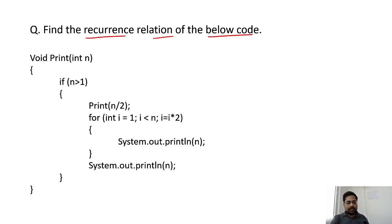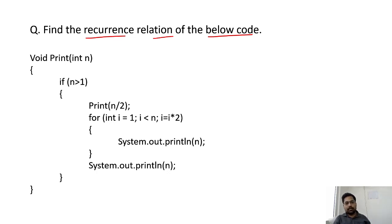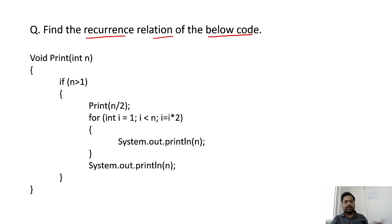Let us start with the recurrence relation. Whenever we are writing a recurrence relation, it is based on recursion — why recursion? Because we cannot easily detect the number of times the function is getting called. We can find time complexity easily in iteration, but for space complexity, in both cases, if recursion is used we can say the stack is getting used. The number of indices we are using could be bigger in recursion, because recursion uses the stack.